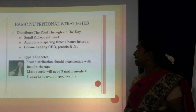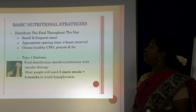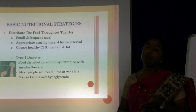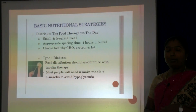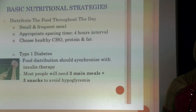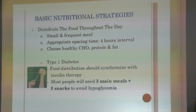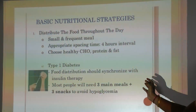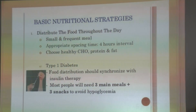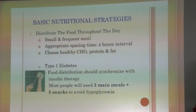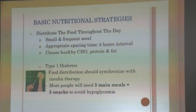The basic nutritional strategy is to distribute food throughout the day in small, frequent meals with appropriate time spacing — a 4-hour interval between meals. Choose healthy carbohydrate, protein and fat. For Type 1 diabetes, food intake should be synchronized with insulin therapy. Most people will need 3 meals and 3 snacks to avoid hyperglycemia.